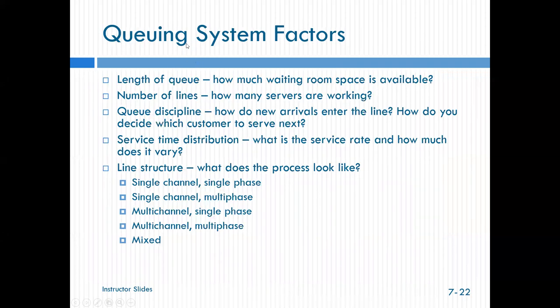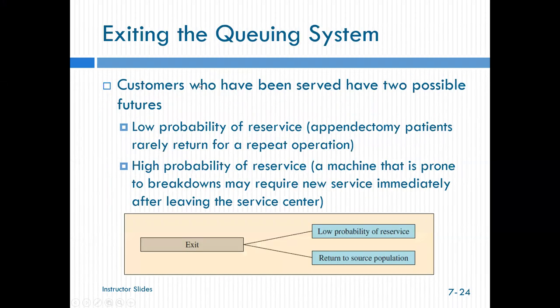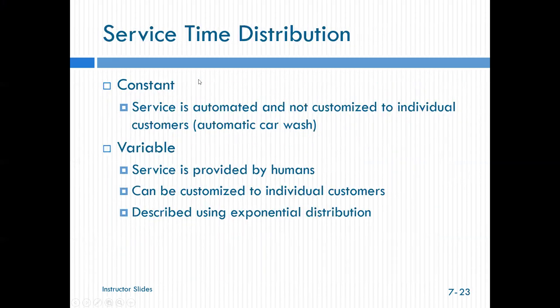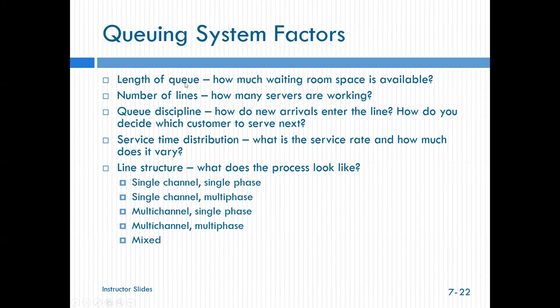Things that we think about within the system itself. How much waiting room is available? What's the length of the queue? How many servers are actually working? How many lines do we have open? What's our queue discipline? How are we first come, first serve? Remember that set that we just went through? What's our service time distribution? What is the service rate and how much does it vary? We also need to think about line structure. So what does the process look like? Is it single channel, single phase? Single channel, multi-phase. Multi-channel, single phase. Multi-channel, multi-phase are mixed. I bet you don't have any idea what I'm talking about. Let me just do a quick, do I have a visual? I don't have a visual on that. What I want you to do is look at, in your text, there is a good visual on that on the upper right-hand page of, I'm sorry, exhibit 7.10, the line structures.